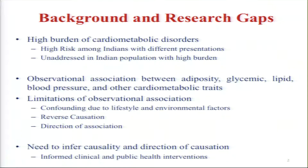Cardiometabolic disease is the number one killer globally, and India, being a large country with a huge population density, has an unaddressed burden of cardiometabolic disorders across the nation. There is ample evidence of observational associations between different cardiometabolic traits — things like adiposity, glycemic levels, lipid profiles, blood pressure, and other outcomes. But the major limitation of observational association is that there's a lot of bias due to confounding from common lifestyle factors and environmental exposures.